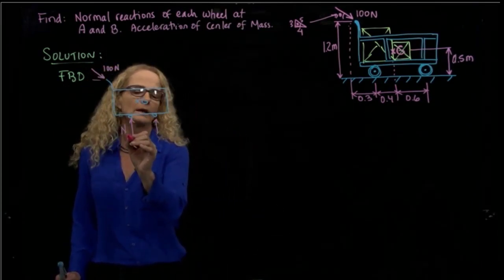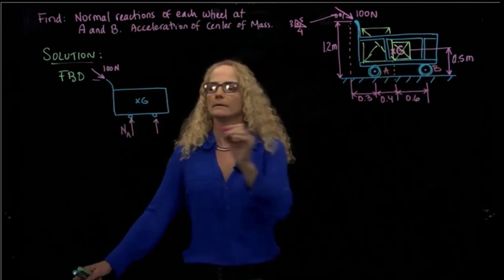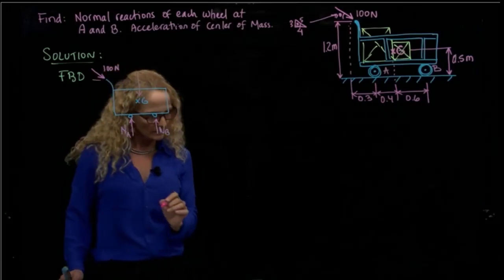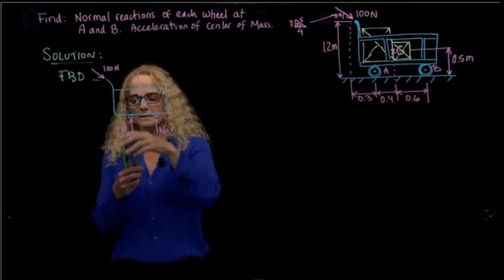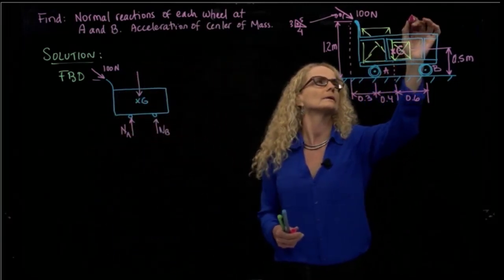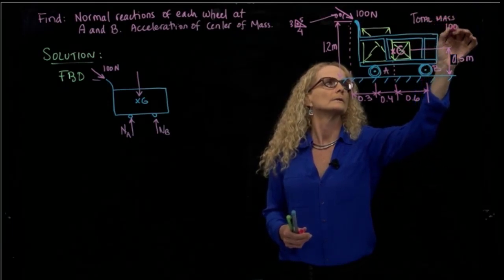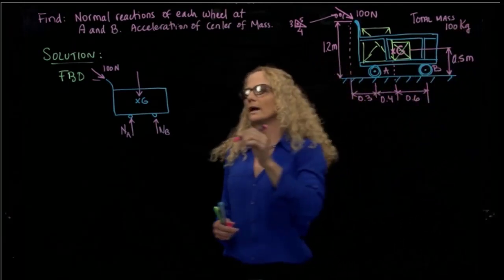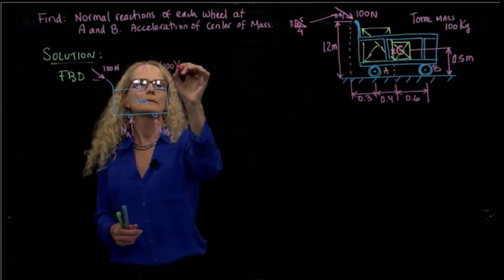And I have the two normals, normal in A. Let's call this wheel A and this wheel B, and I have a normal in B. Of course, I have the weight. They tell us that the weight is the total mass. I did not write it here, but the total mass is 100 kilograms. So we have our weight, which will be 100 times the gravity.